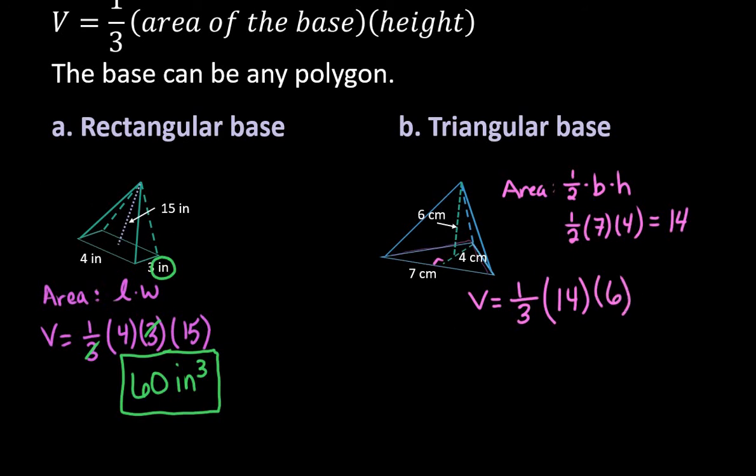So we would do one-third times 14 times the height of the pyramid, which ends up being six. So now if we find this, the easiest thing to do is to take the one-third of the six first. So six divided by three ends up giving us two. And so we're just left with two times 14. So if we find two times 14, we would end up with 28. And on this one, again, our units would be cubed because we are finding the volume.